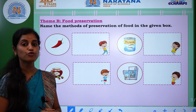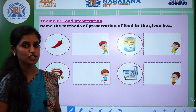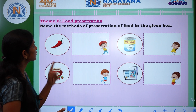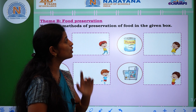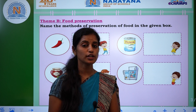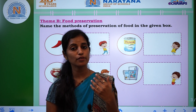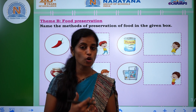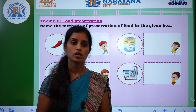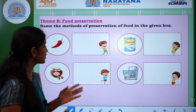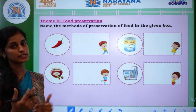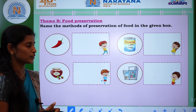The next activity is food preservation. Here, match the methods of preservation of food from the different options. In our daily life, in our home also, we preserve different types of food items. Here we have some food items — how can we preserve them? We can find out.